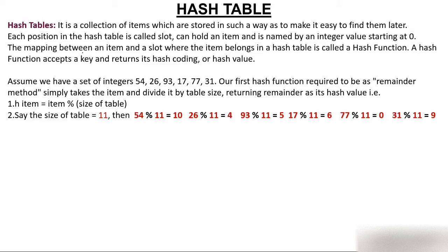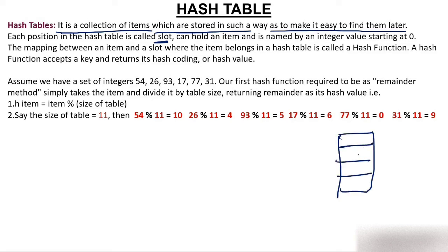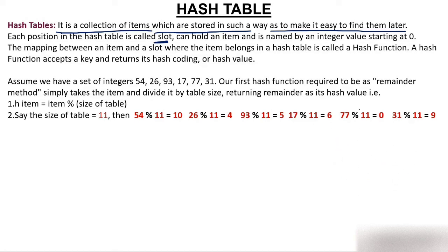So now the second topic: what is a hash table? A hash table is a collection of items which are stored in such a way as to make it easy to find them later. We store keys in the hash table so that when we want to retrieve them, we can do so very easily. Each position in a hash table is called a slot.